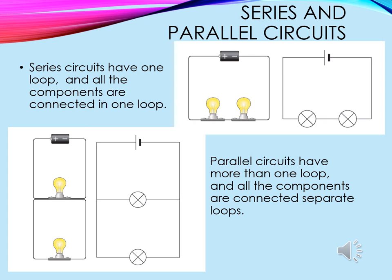We need to know the difference between a series and a parallel circuit. A series circuit is what we call a loop — all the components are connected in a loop, so from the battery it goes to the bulb, from the bulb to other components, and then all the way back to the battery again. Parallel circuits tend to have more than one loop, and we say they have a junction where they split off into a separate loop.